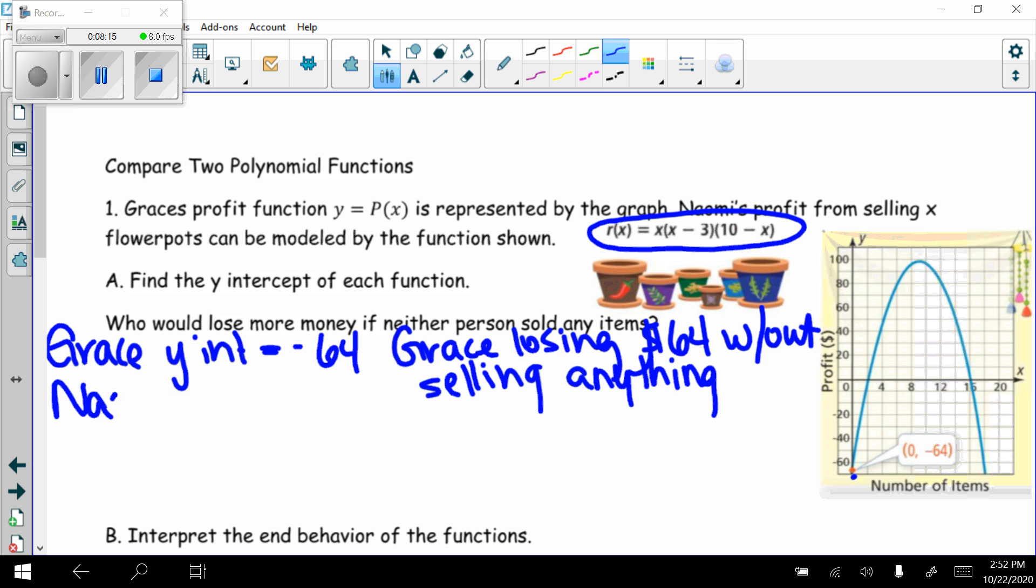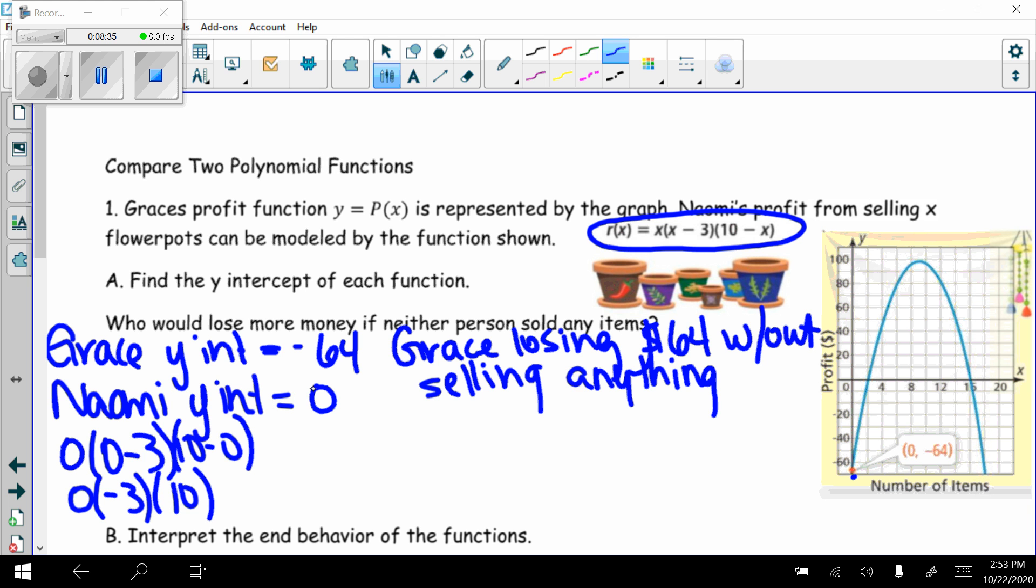So now we want to find Naomi's y-intercept. If I plug 0 in for all of my x's, that gets me my y-intercept. So 0 times (0 - 3) times (10 - 0). 0 times anything is 0. What does that mean? Naomi's startup cost is 0. Naomi doesn't sell anything, she doesn't make anything, but she doesn't lose anything. To answer the question, Grace will lose more money if no one sells anything.